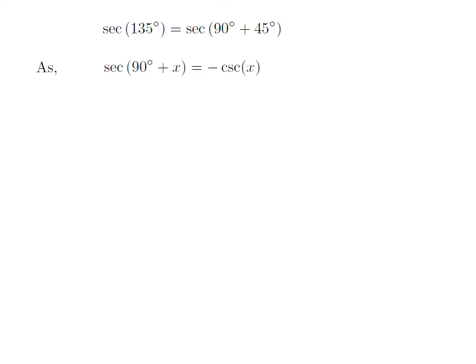As we know, the trigonometry identity secant of 90 degrees plus x is equal to minus cosecant of x.